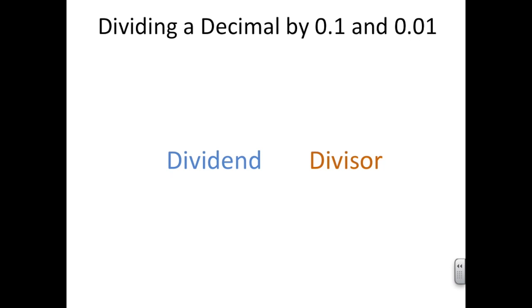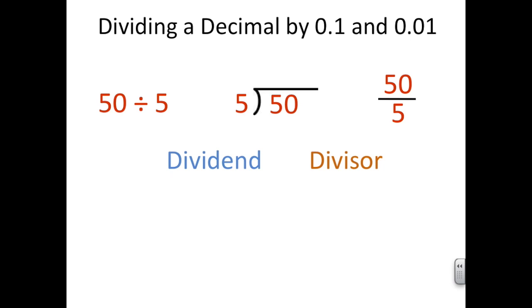We're going to take a look at a problem and show it in the three different ways that we now know how to show division. We can show 50 divided by 5 as it's currently written, we can show it as long division, and we can show it as a fraction. We know that all three of these symbols mean divided by.